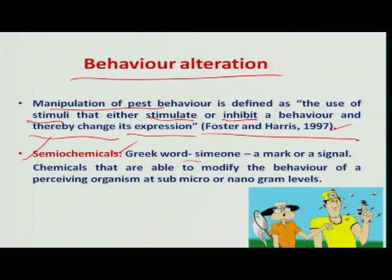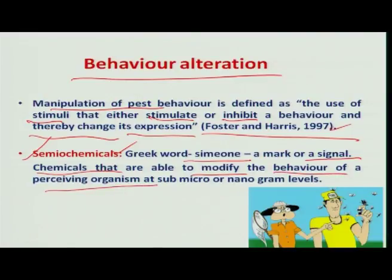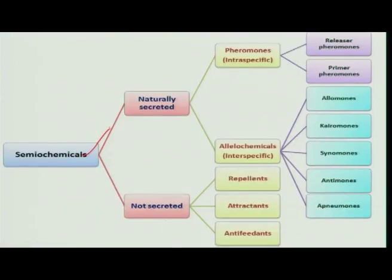The word 'semion' is derived from a Greek word meaning 'a mark' or 'signal.' Those chemicals that are able to modify the behavior of an insect in its perception, causing a change in behavior at very low levels, are called semiochemicals. These semiochemicals can be divided into naturally secreted ones and those which are not naturally secreted.